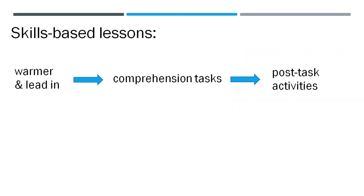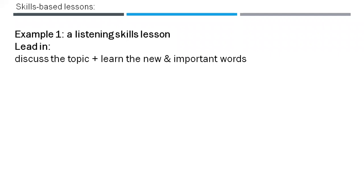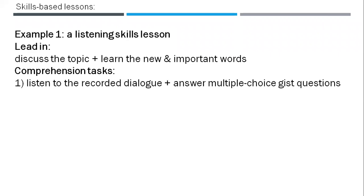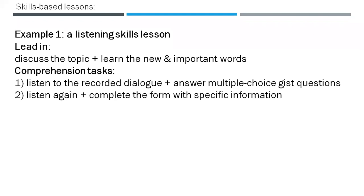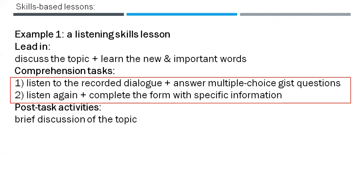For example, a listening skills lesson: the lead-in would be discussing the topic of the listening and learning any important new vocabulary. Then comprehension tasks like listening to the recorded conversation and answering multiple choice gist questions. Then listening to the conversation again and completing a form with specific information. Then post-task activities like a brief discussion of the topic. The comprehension activities for listening or reading start with focusing on more general levels of comprehension before moving on to skills requiring more detailed or specific attention to the text.